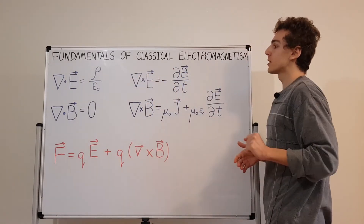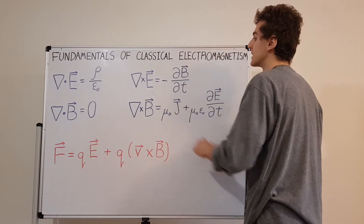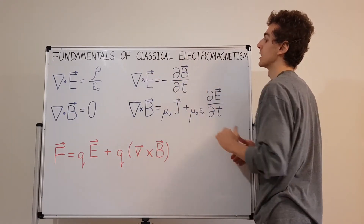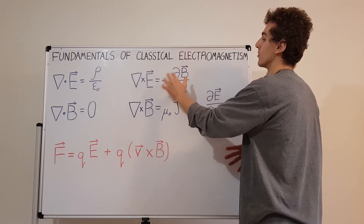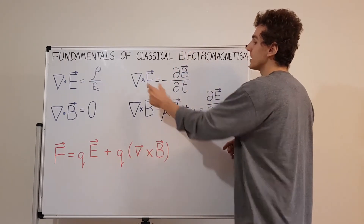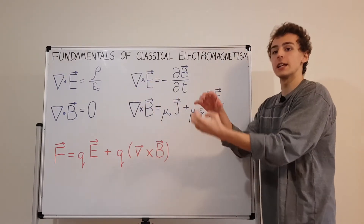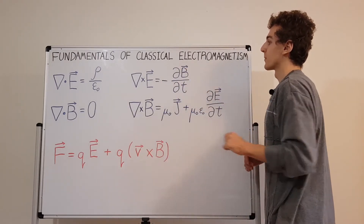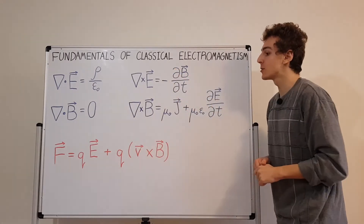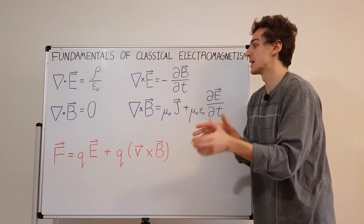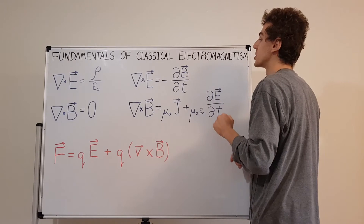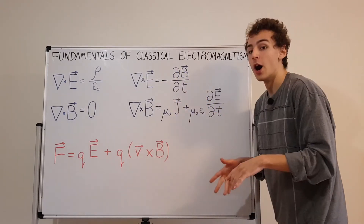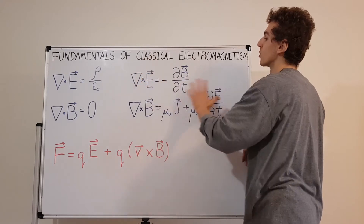These two equations: this one is called Faraday's law of induction, and the negative sign is qualitatively described by Lenz's law. Faraday's law says that the curl of the electric field — how things circulate in three dimensions — is related to the negative of the partial derivative with respect to time of the magnetic field. That means if you have a changing magnetic field, it's going to produce some rotation in the electric field. This minus sign says that the circulation will always oppose the change in the magnetic field.